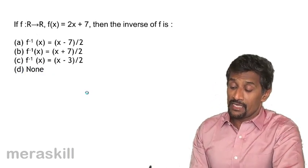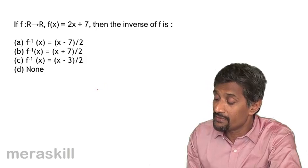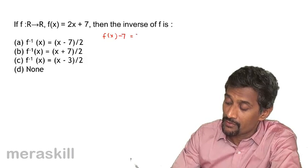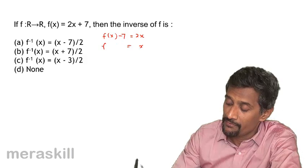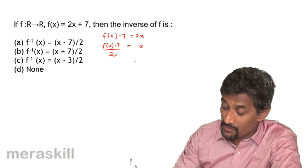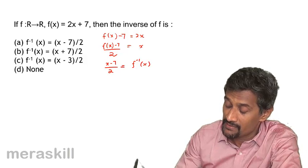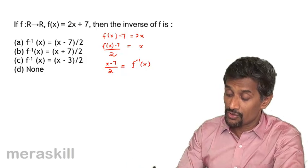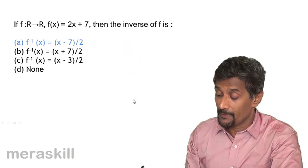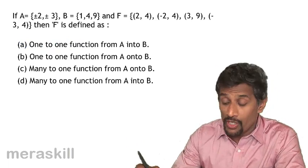Given a function f: ℝ→ℝ defined by f(x) = 2x + 7, find the inverse. From f(x) = 2x + 7, we get f(x) − 7 = 2x, so x = (f(x) − 7)/2. Replacing x with f⁻¹(x) and f(x) with x gives f⁻¹(x) = (x − 7)/2. The inverse function of 2x + 7 is (x − 7)/2.